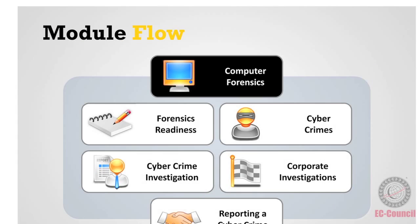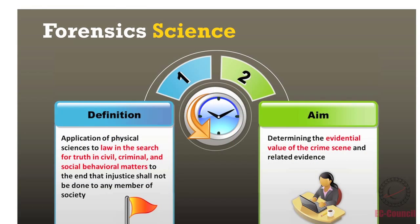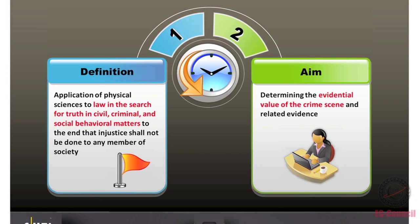First, we'll talk about computer forensics — what is forensics or computer forensics? It's based on the concept of forensic science. Forensic science is the application of physical science to law in search for the truth in civil, criminal, and social behavior matters, to the end that injustice shall not be done to any member of society. We're trying to determine what has actually occurred by looking at the forensic evidence at the scene and then using some scientific process to help glean what that information means to us.